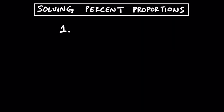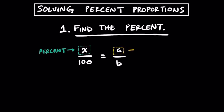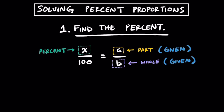Throughout this video, there are three key types of problems that we're going to practice solving together. The first type involves solving for the percent. We'll consistently set up each proportion as x over 100 is equal to a over b. x always represents our percent, a represents the part, and b represents the whole. In these types of problems, the part and the whole will be given, and we need to solve for the percent, or x.